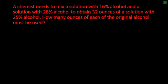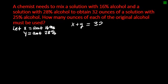Another one: A chemist needs to mix a solution with 16% alcohol and a solution with 28% alcohol to obtain 32 ounces of a solution with 25% alcohol. How many ounces of each of the original alcohol must be used? Let X represent the amount of 16% and Y be the amount of 28%. We need 32 ounces total, so X plus Y equals 32.